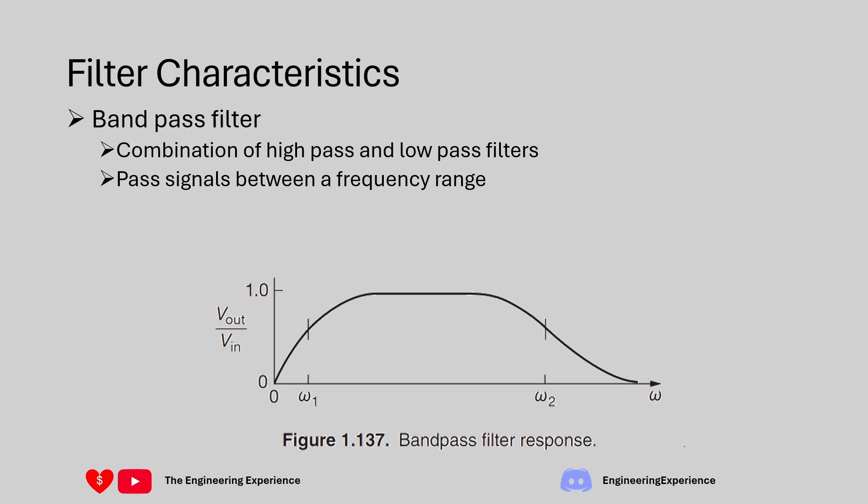A bandpass filter is a circuit that passes frequencies within a certain range and attenuates frequencies outside of that range. On the figure you can see this range which is the pass band, and then anything outside of that range from omega 1 to 0 and from omega 2 to infinity will attenuate those frequencies.